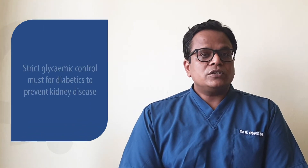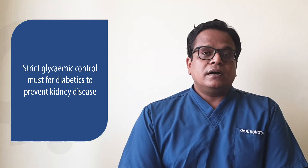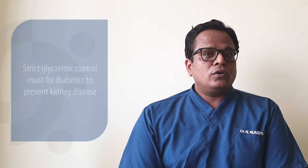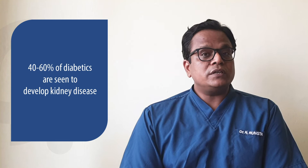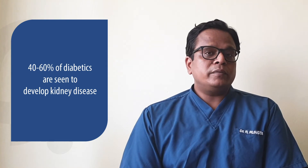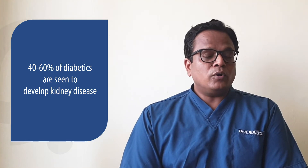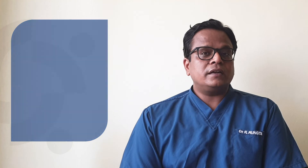The single most important mistake that most diabetics make that can land them in nephropathy or kidney disease is not checking their sugar levels regularly. Strict glycemic control is very, very important to prevent kidney disease. Not all diabetic patients develop kidney problems — studies have suggested that only 40 to 60 percent of diabetics actually develop kidney problems, and that too over a very long period of time.